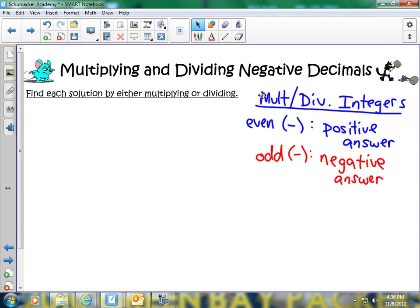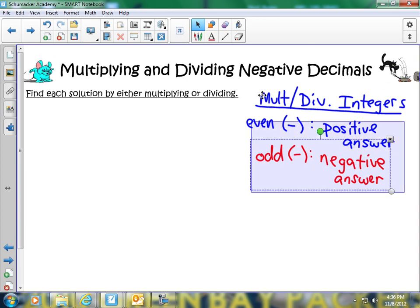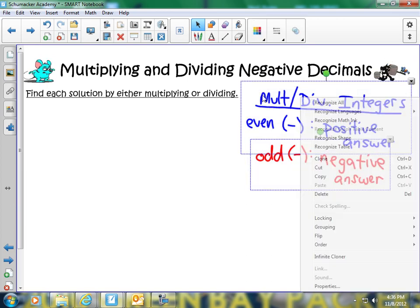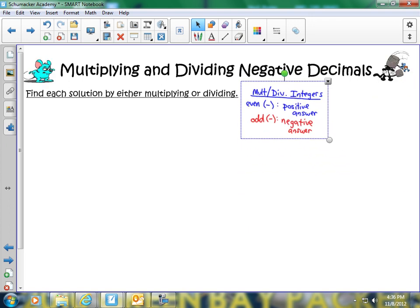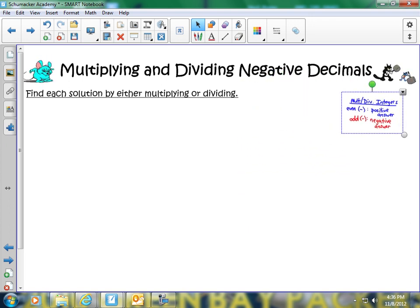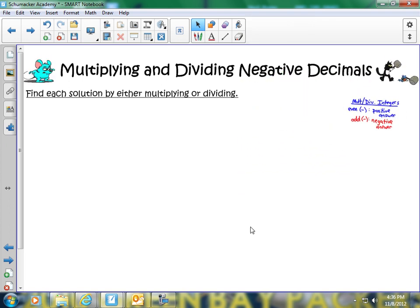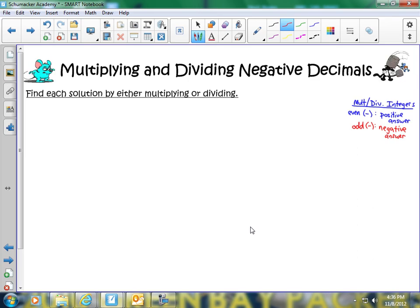So what you need to do is you solve your problem, whether it is an integer problem or in this case, a decimal problem. And then you're going to go ahead and count up your negative signs in the problem. And then go ahead and assign a positive or negative sign, depending on what we're looking at.